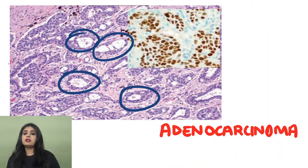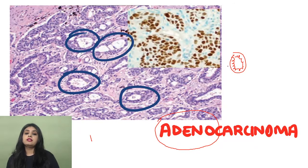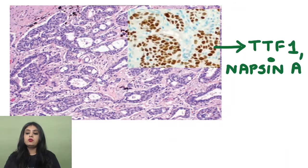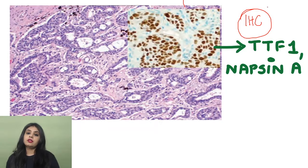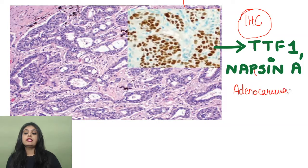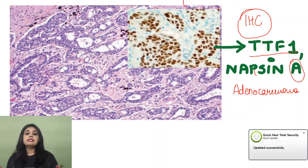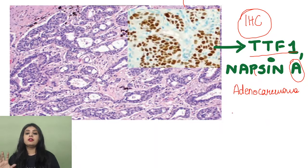Moving on to adenocarcinoma: whenever you see atypical cells forming a gland — a round, gland-like structure — in the lung, that's adenocarcinoma. On immunohistochemistry, when cells turn brown, adenocarcinoma is positive for Napsin A as well as TTF1. Both TTF1 and Napsin A are important immunohistochemical markers for adenocarcinoma.